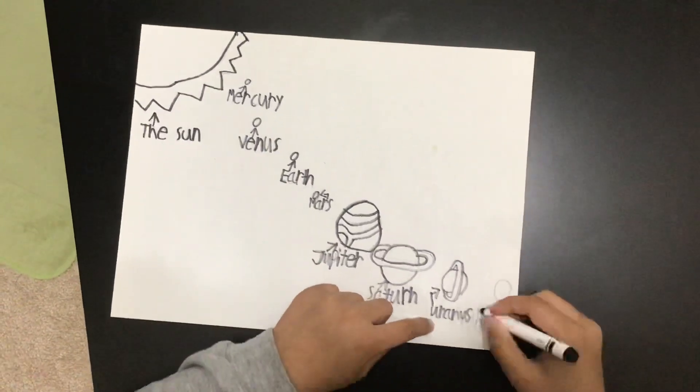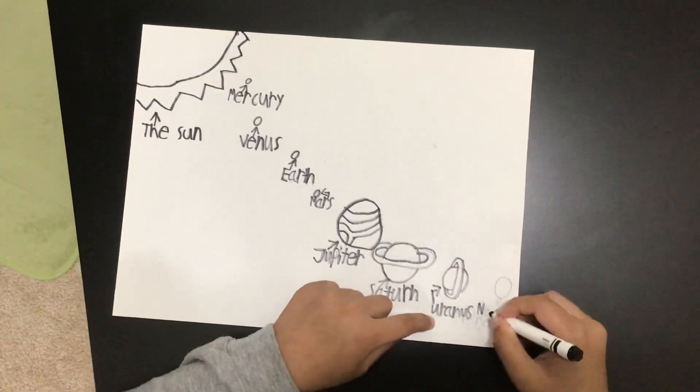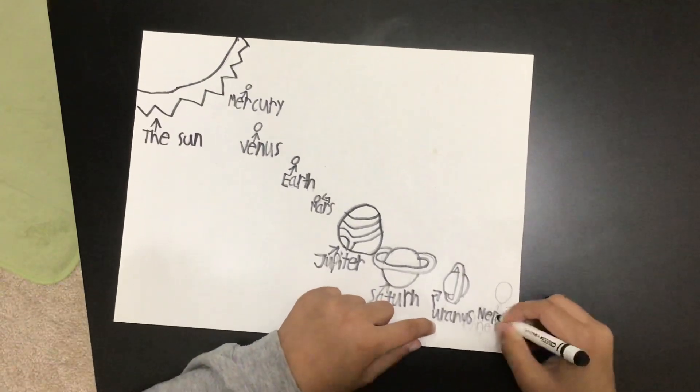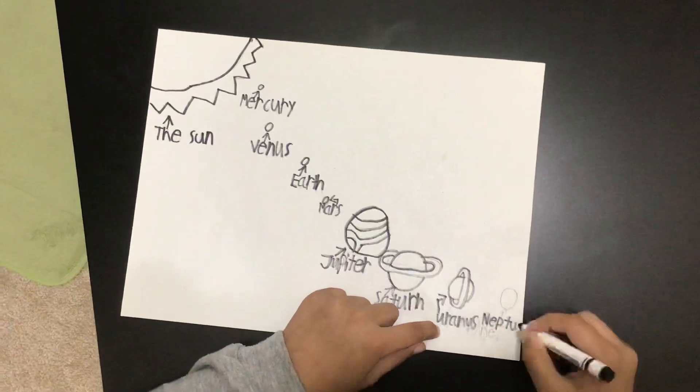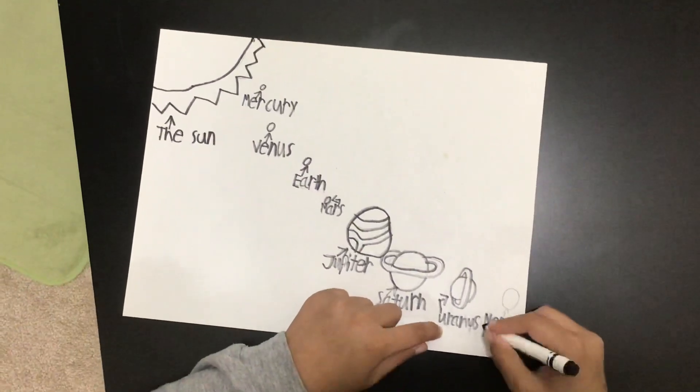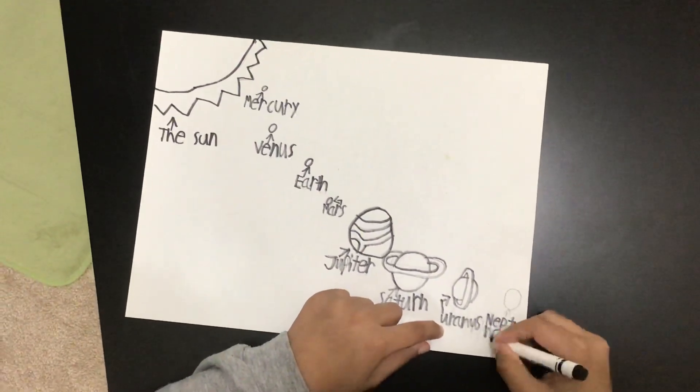This is the last planet in the solar system. Its name is Neptune. Neptune has the most powerful winds. Its color is dark blue.